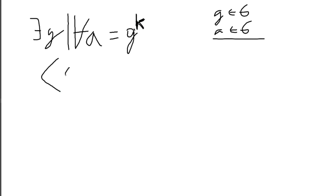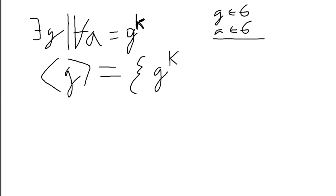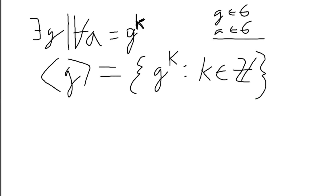The notation we use is these special brackets with just the generator inside, representing the set of all g to the k, where k is some integer. We use integers because we repeat the operation a whole number of times — not 1.2 times, for example — so one time, two times, and so on.